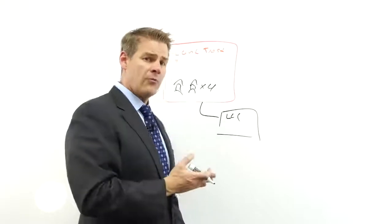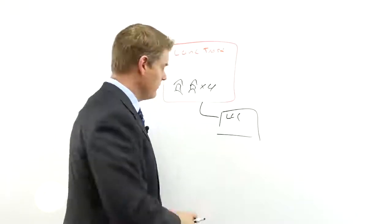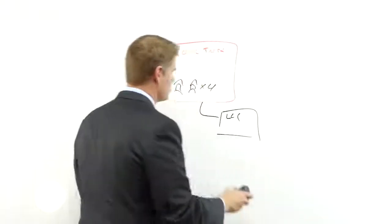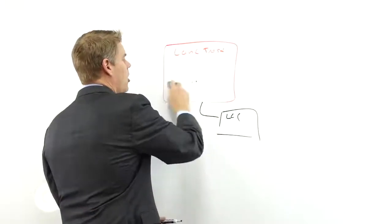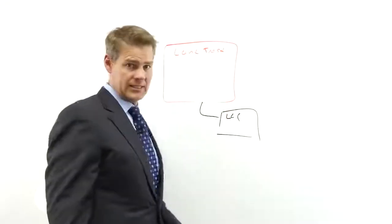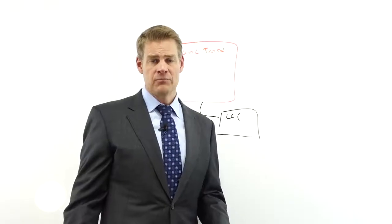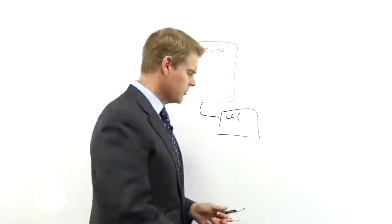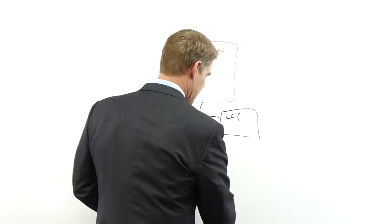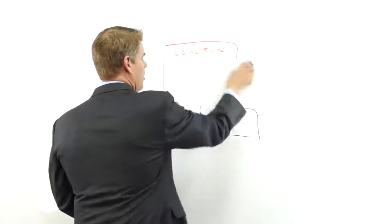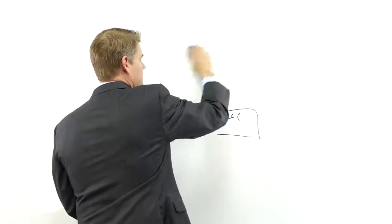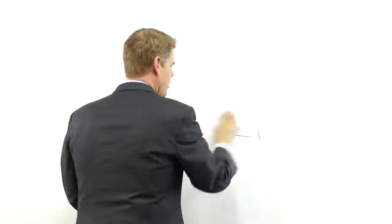If you put eight properties in one land trust, if anything happens to any one of those properties, then all of them are put at risk. With asset protection what we want to do is segregate out our assets. We don't want to keep all our properties in one basket, because if one goes bad, they all go bad.